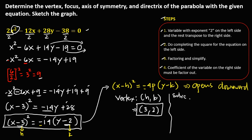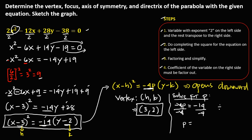To solve for p, equate the coefficients: negative 4p equals negative 14. Divide both sides by negative 4. Negative divided by negative is positive, and 14 divided by 4 reduces — since both are divisible by 2, we get 7 over 2. Therefore p equals 7 over 2.